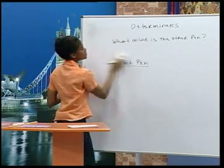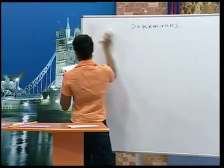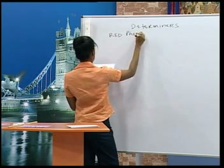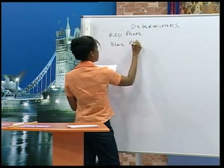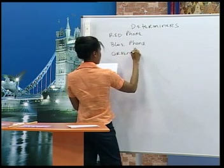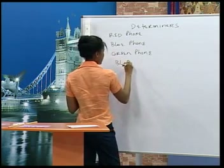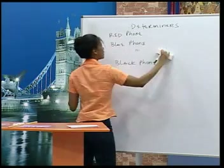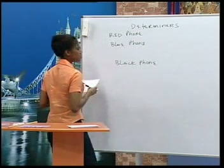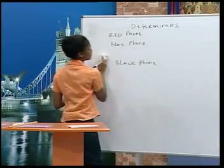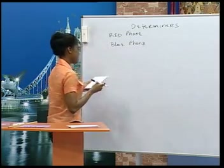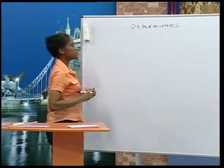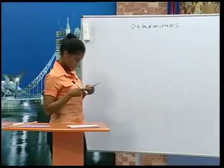Sylvia, this time we have four phones on the table: a red phone, a blue phone, another phone is green, and the other phone is black. Take one phone. I took the green phone. And what's the next phone you took? I took the black phone. And take another one. I took the red phone and the blue phone. How many phones are now on the table? There are no phones on the table. That's right — you have all the phones now.